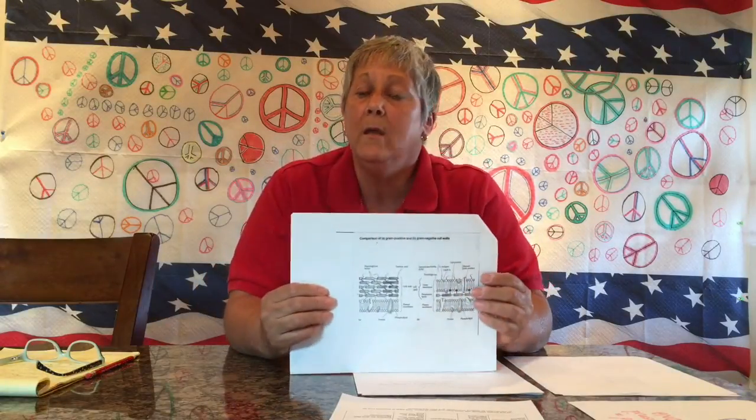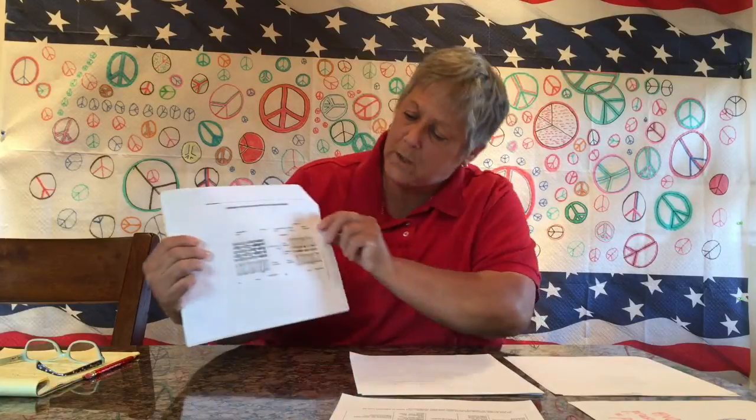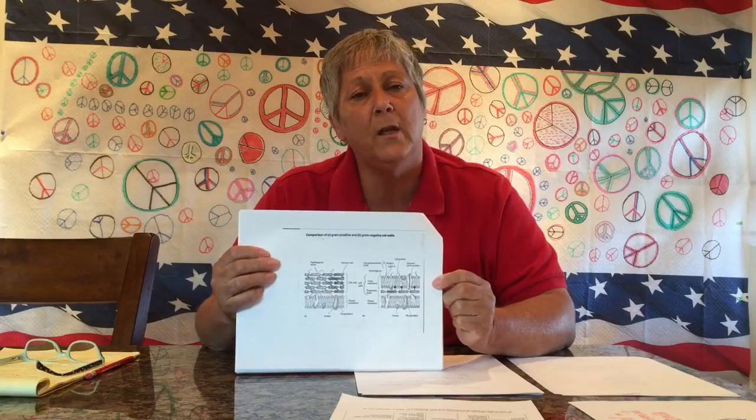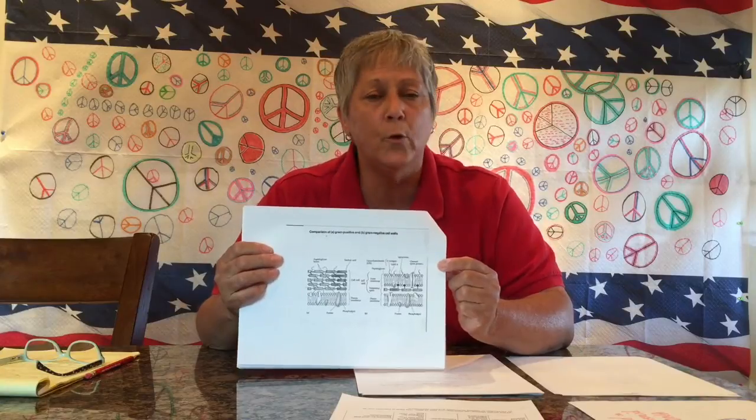The gram-negative cell wall is structurally a lot more complex, made of two main components. There is a periplasmic space, and in that space we have a thin layer of peptidoglycan. Outside of the periplasmic space, we have what's called an outer membrane. So the gram-negative cell wall is made up of the periplasmic space and the outer membrane. The outer membrane looks very much like the plasma membrane — it's made up of two layers of phospholipid molecules. We also see large globular proteins called channel or pore proteins embedded in the gram-negative cell wall. There are no teichoic acids in the gram-negative cell wall. The channel proteins have a tunnel running through them, allowing some substances to move across the gram-negative cell wall.